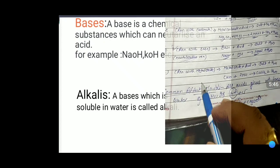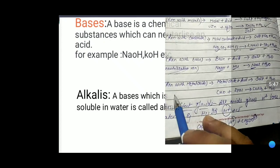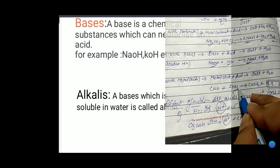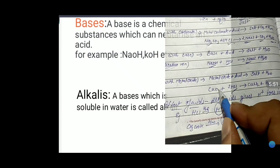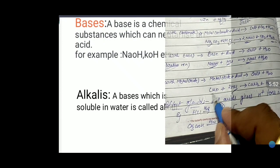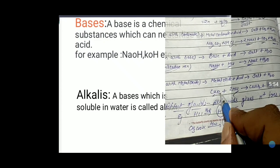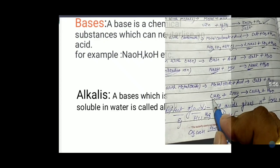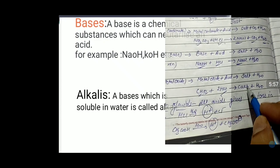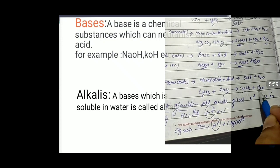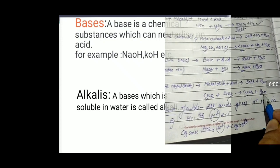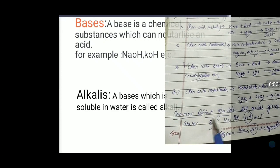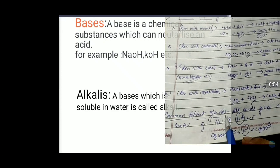Fourth chemical property: reaction with metal oxide. When acid reacts with a metal oxide, for example copper oxide (CuO), it forms salt and water. This is another important chemical property of acids.